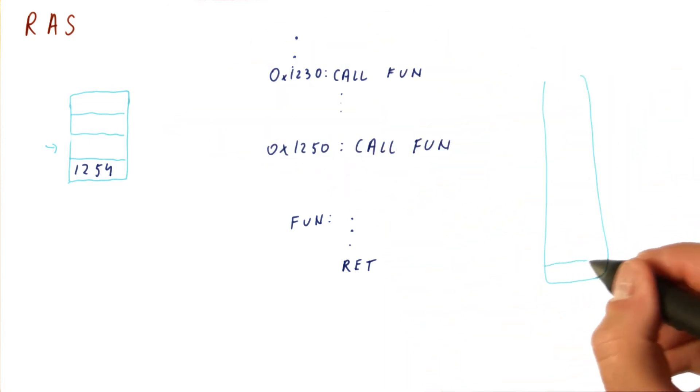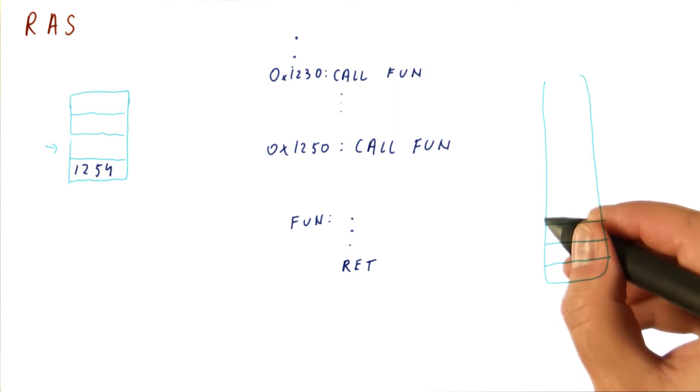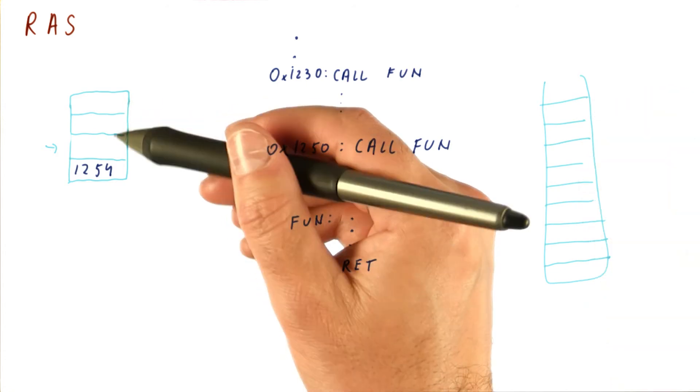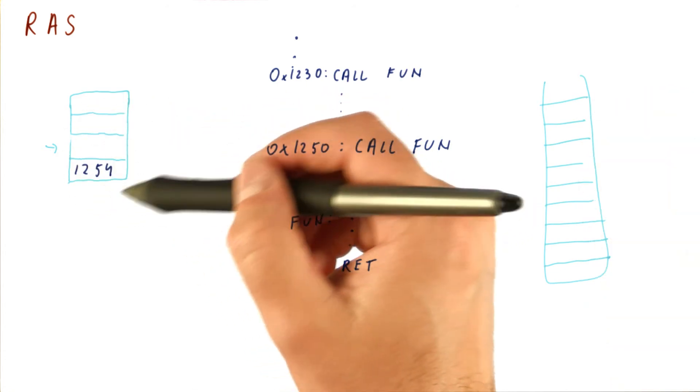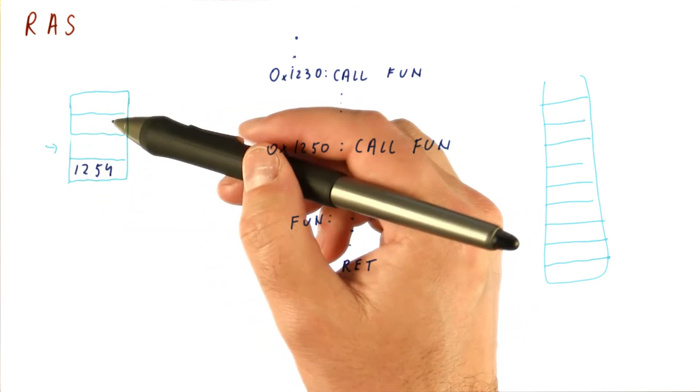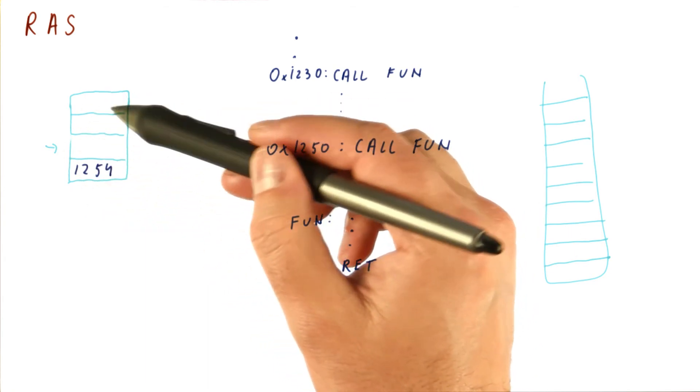So unlike your traditional stack, where you will push something onto the stack, call another function from there, call a nested function, and you can do that many times until you run out of memory, in this particular case we can have a very small hardware structure so that it can make a prediction very quickly, like in one cycle. Thus, it can only have a limited number of entries.